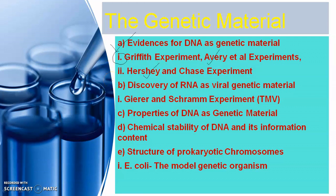The second subtopic in this unit is the Discovery of RNA as a viral genetic material, and the experiment we will see here is the Gierer and Schramm experiment conducted on Tobacco Mosaic Virus. Then next we will see properties of DNA as a genetic material, chemical stability of DNA and its information content, and lastly the structure of prokaryotic chromosomes — in that we will see E. coli, the model genetic organism.